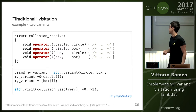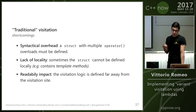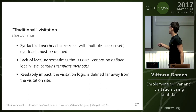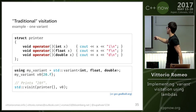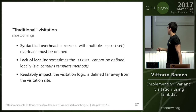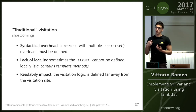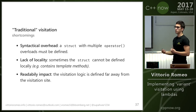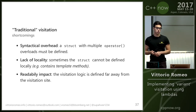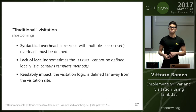This is great, but it has shortcomings. The most obvious is syntactical overhead — you have to define a struct with multiple operator overloads; pretty much all of that is boilerplate when you just want to say 'do this for int, this for float, this for double.' There's also a lack of locality because you often can't define the struct near the visitation site, especially if it has template methods — it cannot be defined inside a function. So you might have to jump up and down in your source code to figure out what the visitation logic is.